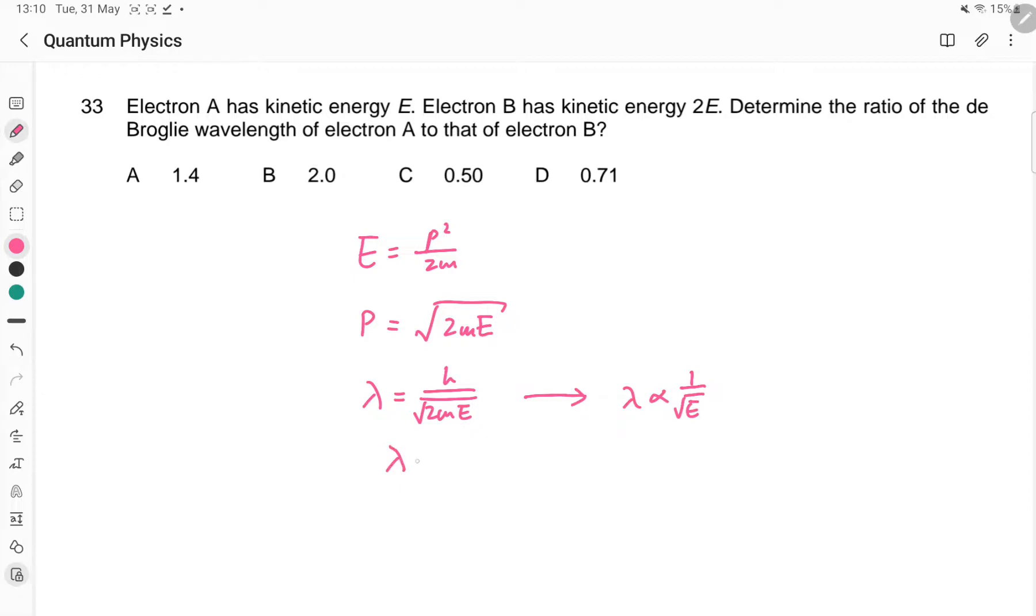Therefore, you want lambda A over lambda B. This equals the square root of EB over EA, which equals square root 2.